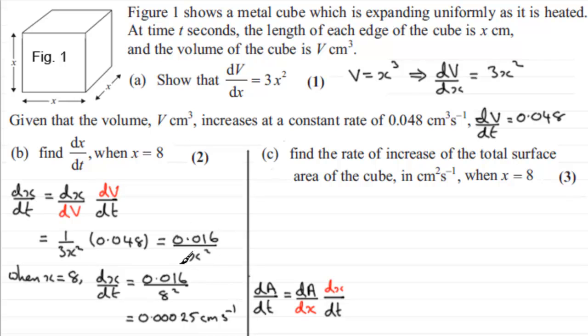I've got dx by dt in general. dx by dt was equal to 0.016 over x squared. I need to get dA by dx. So what is the total surface area A going to be? Well, the area of all the faces of this cube here are exactly the same, and there's six of them. And the area of one face here is going to be x times x, that's x squared, six faces, so that's going to be 6x squared. So I can therefore find dA by dx. dA by dx, if we differentiate A with respect to x, is going to be 12x.